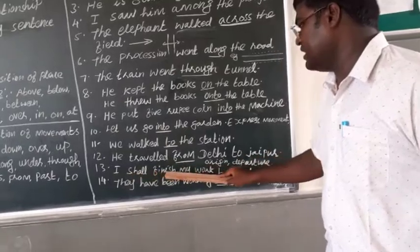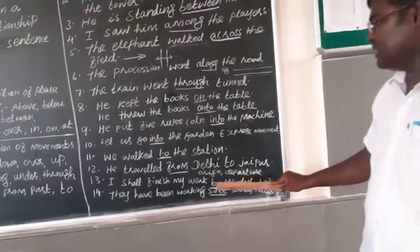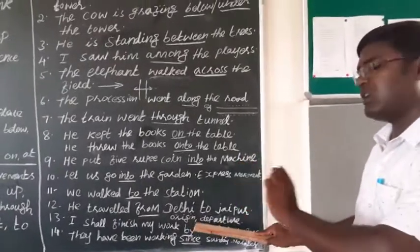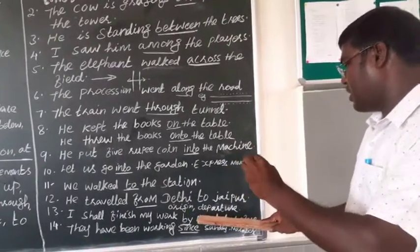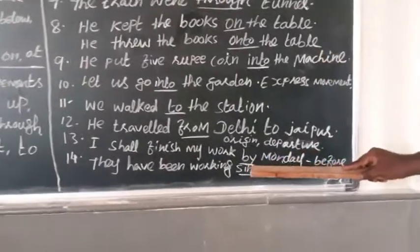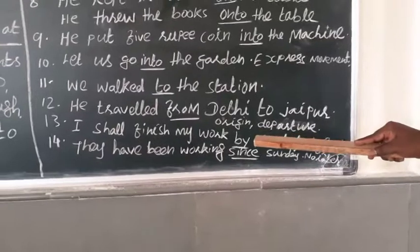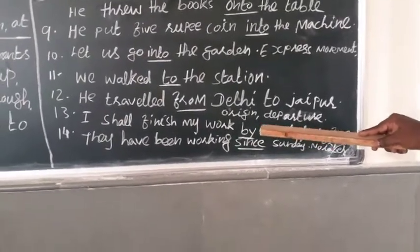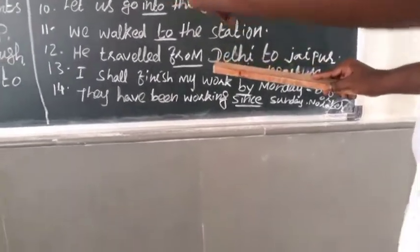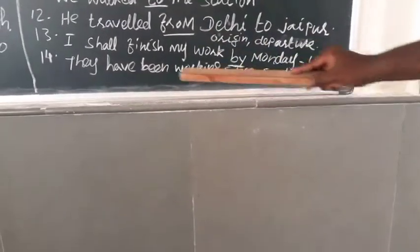I shall finish my work by Monday. Now, you see, by can be used to show the precise particular moment of period, or before or no later than. No later than means particular time, until particular time. I will finish my work by Monday. Specifically speaking about period of time, duration. Then we should use by.